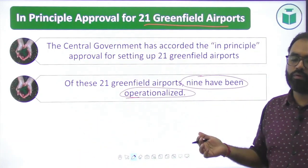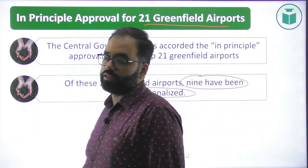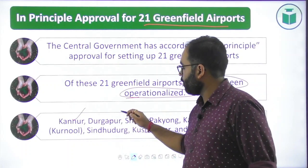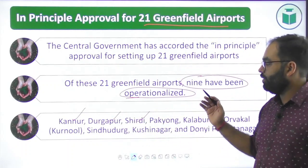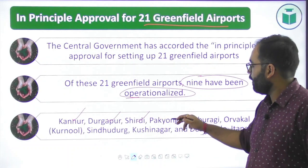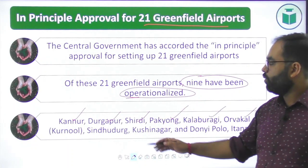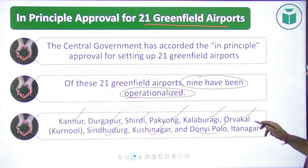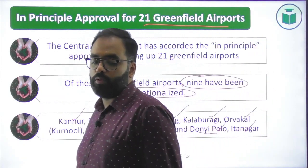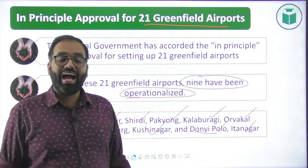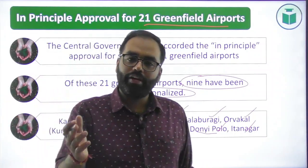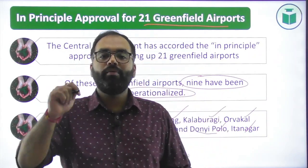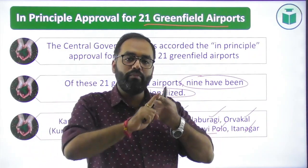The remaining 12 airports are yet to be operationalized. For factual knowledge, airports which have already been operationalized under the greenfield policy include those at Durgapur, Shirdi, Pakyong, Kalaburagi, Oravakal (Kurnool), Sindhudurg, Kushinagar, Deoghar, and Itanagar.